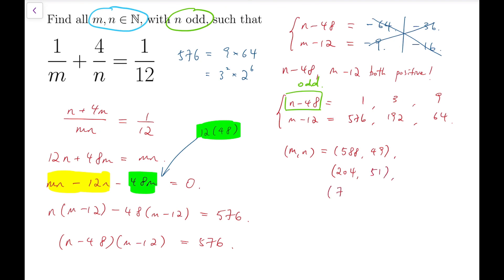The second pair to be 204, 51, and also 76, 57. So, these 3 pairs are the only solutions for this equation.